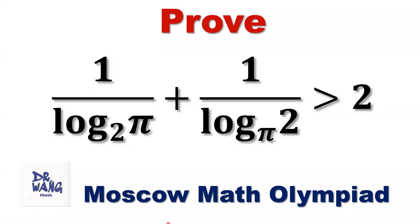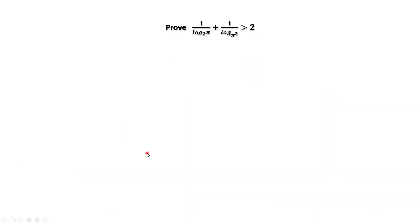Hello, everyone. I'm Dr. Wen. Here is the question. Prove 1 over log of pi to the base 2 plus 1 over log of 2 to the base pi is bigger than 2. How to prove this inequality?